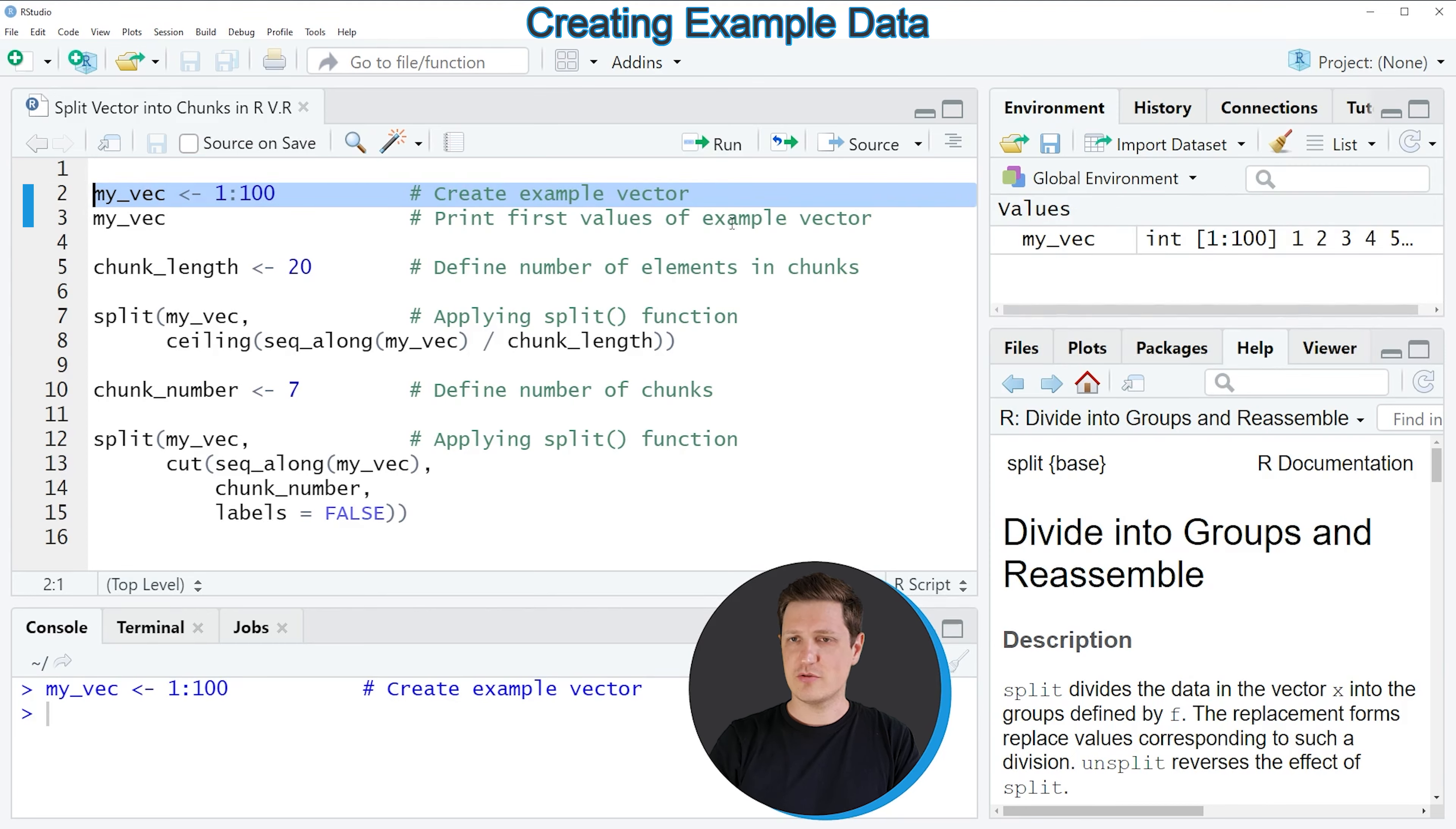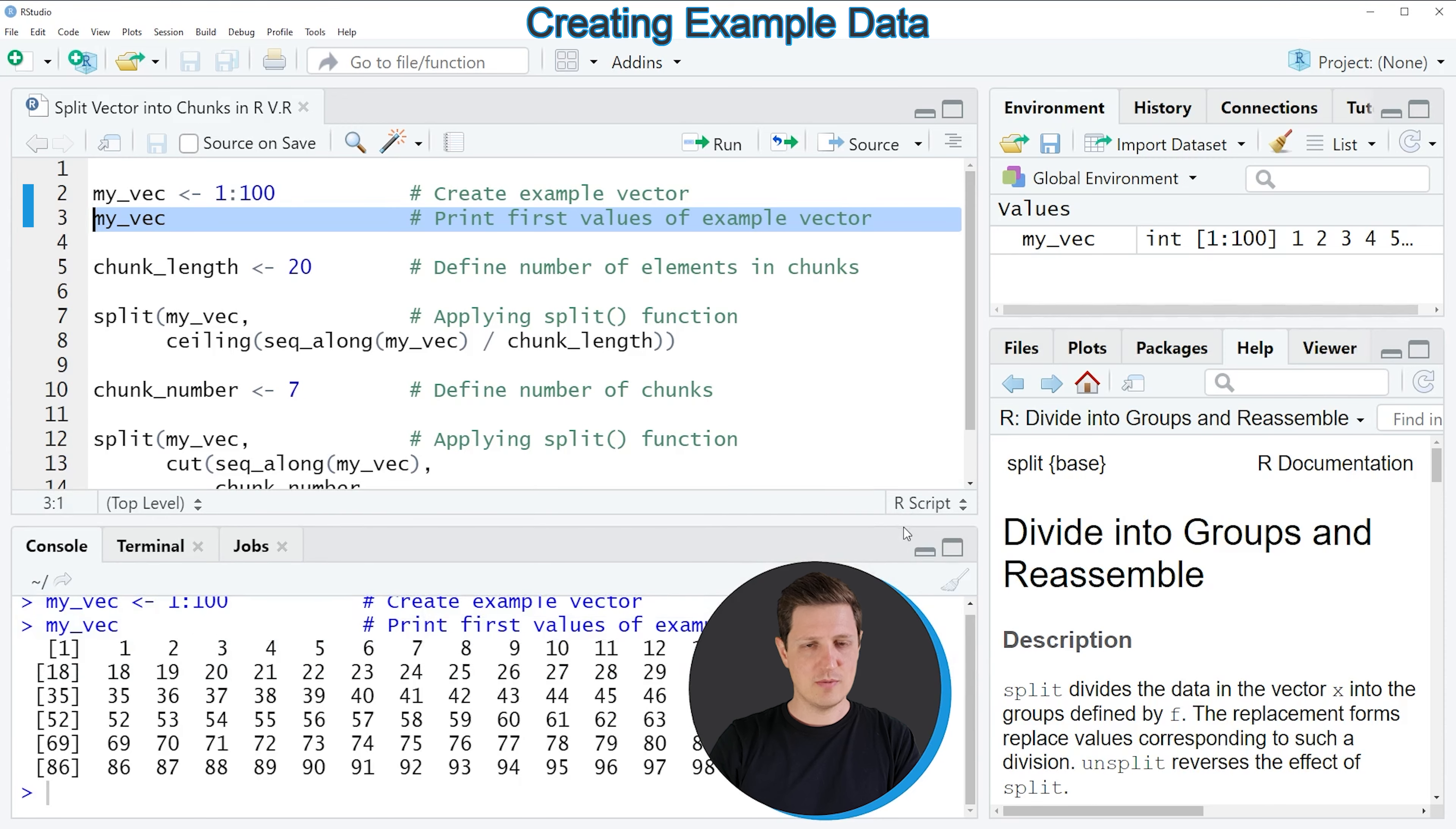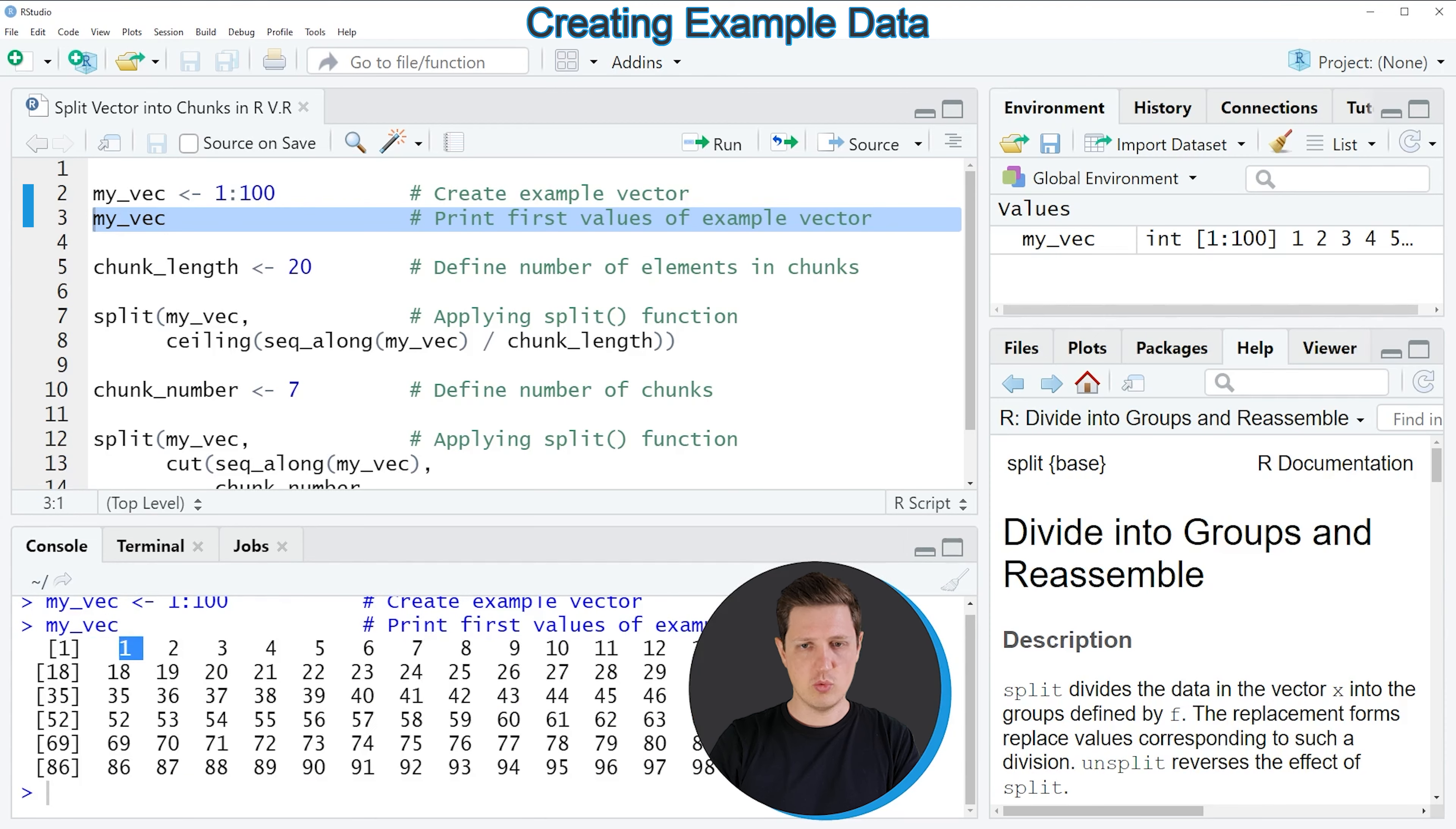So if you run this line of code, you can see at the top right of RStudio that a new vector object appears, which is called myVec. And we can print this vector to the RStudio console by running line 3 of the code. After running this line, you can see that our vector contains 100 numeric elements ranging from 1 to 100.